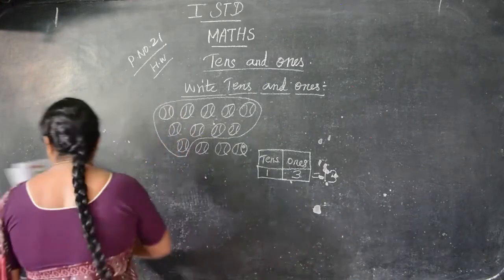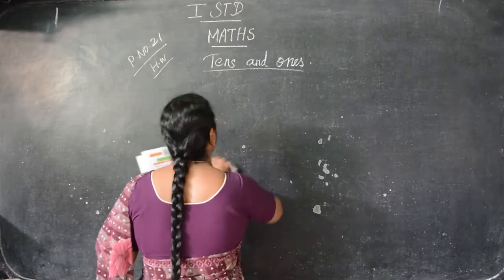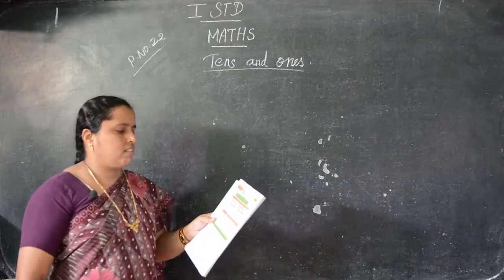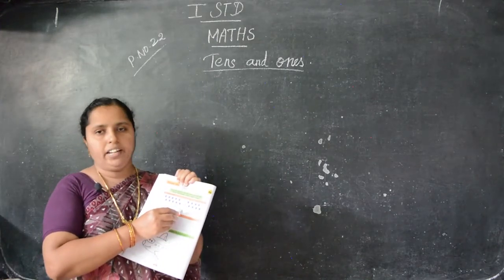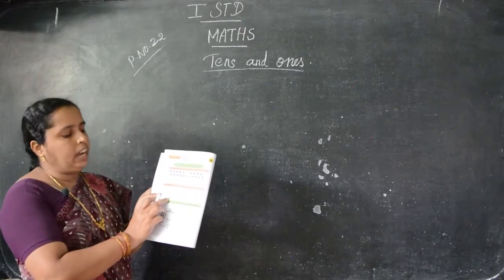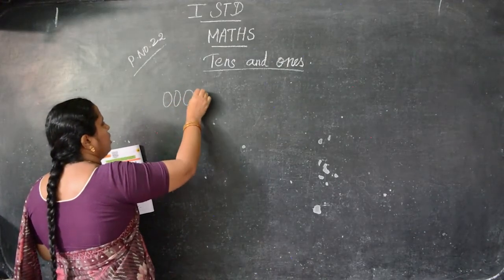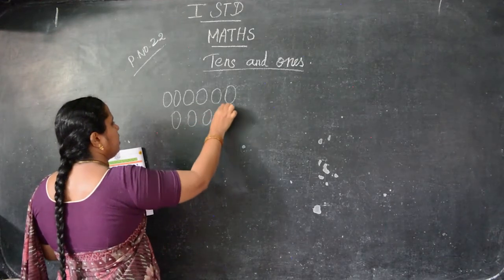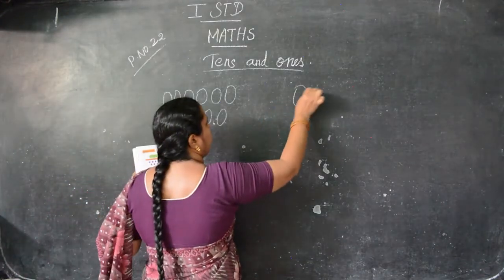Take page number 22. Draw stars: 1 ten, 8 ones. Here see — here 10 stars, here 8 stars, so 18. Here they are given — draw X: 1 ten and 2 ones. So in this place you have to draw the X. 1 ten means you have to draw 10 X: 1, 2, 3, 4, 5, 6, 7, 8, 9, 10. Here 2 means only 2 X: 1, 2.